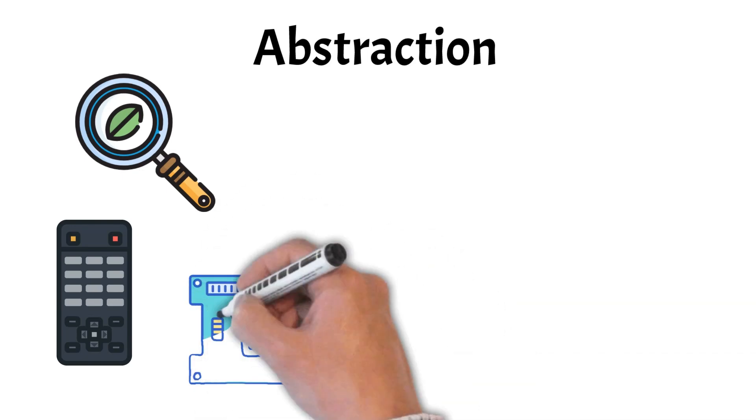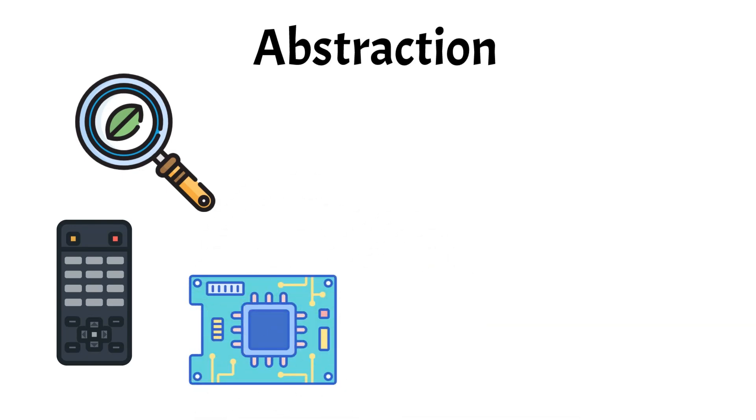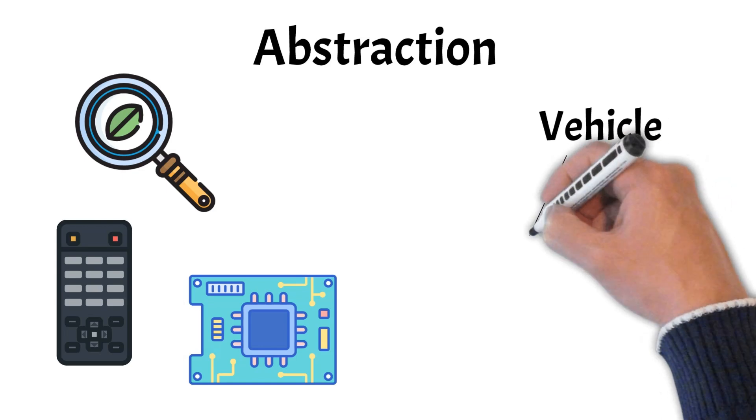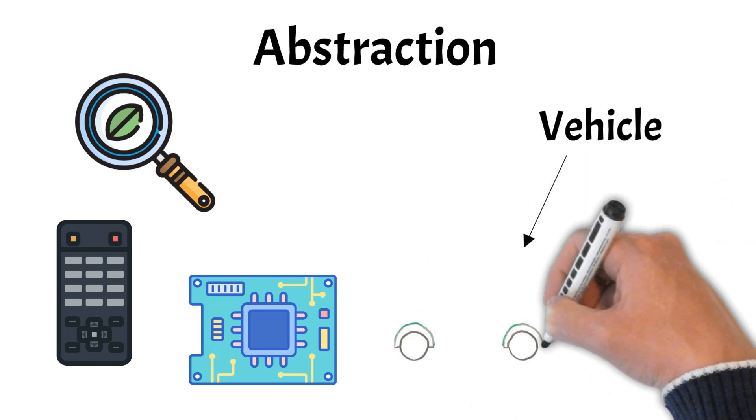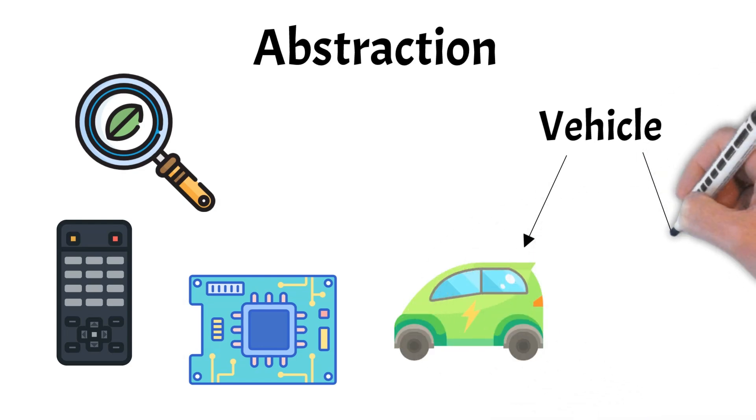In coding, abstraction allows developers to create simple models of real-world things. For example, a vehicle class might define general features all vehicles have, like wheels and the ability to move. Specific types like car or bicycle can then use this general model, but add their own unique features.